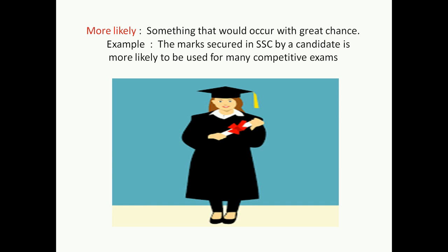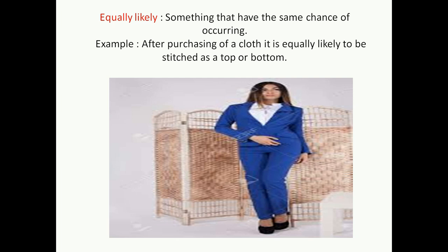Next is 'equally likely' — something that has the same chance of occurring. It means the possibility for it to happen or not to happen is equal. For example, after purchasing a cloth, it is equally likely to be stitched as a top or a bottom, meaning there are equal chances for either outcome.